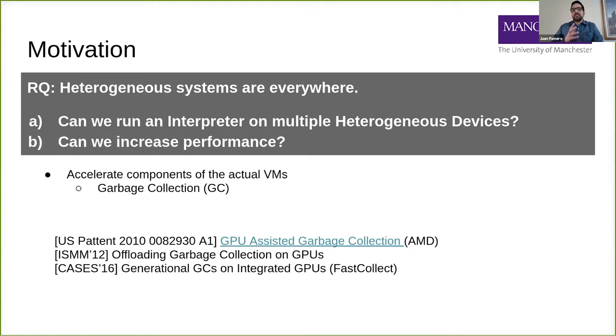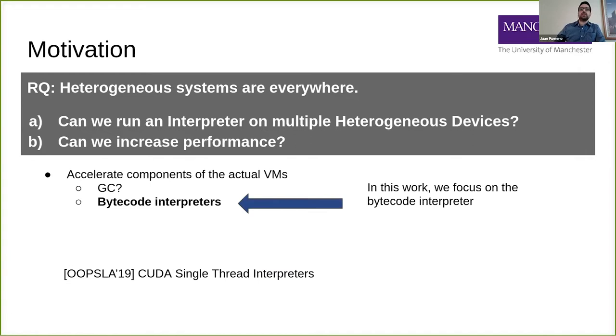This idea is not new. In the context of garbage collection, there has been some work around. For example, in 2010 there is a patent by AMD for GPU-assisted garbage collection. There's a nice paper in 2012 by Martin Maas in ISMM 2012. And more recently, there is a paper regarding generational garbage collection for integrated GPUs called Fast Collect. In this paper, garbage collection is focused on bytecode interpreters.